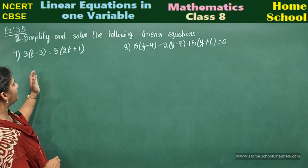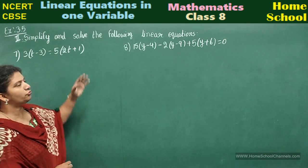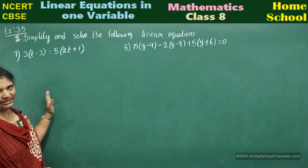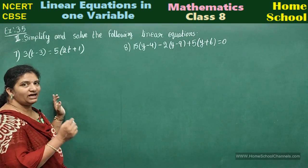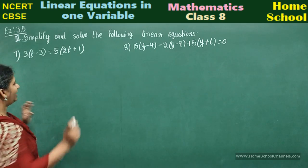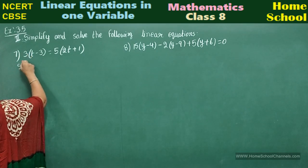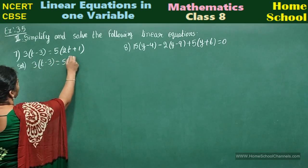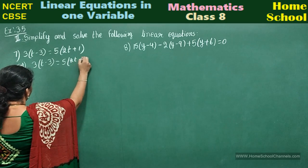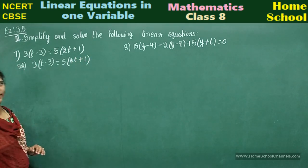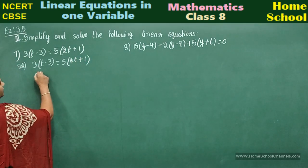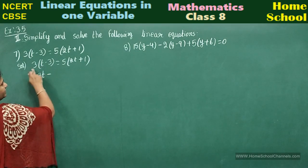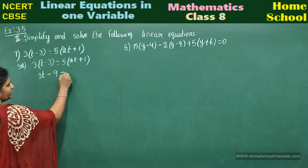Problem number 7: 3(t - 3) = 5(2t + 1). In the given equation, the variable is t. We need to simplify and find the value of t. Start the solution. Take again 3(t - 3) = 5(2t + 1). Multiply 3 into t: 3t, and minus 3 times 3 is minus 9.